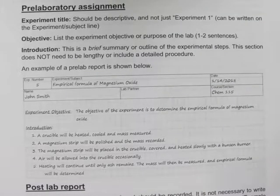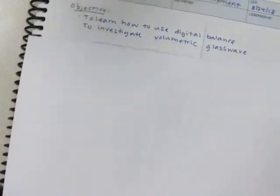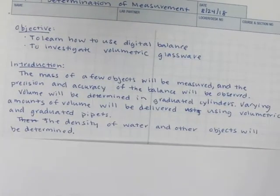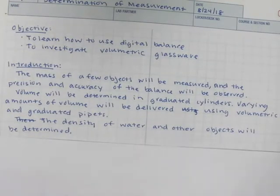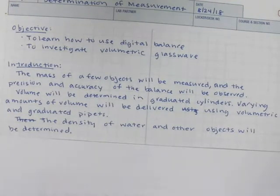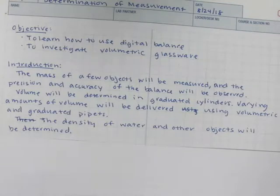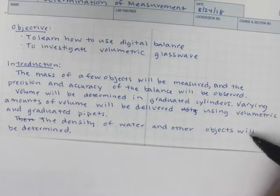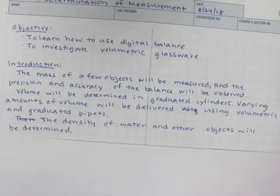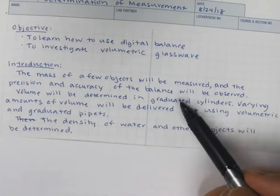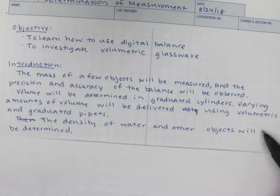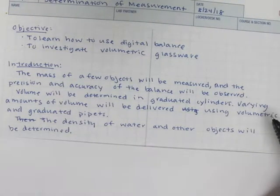So for experiment one that I've done here for you, this is just a summary. The mass of a few objects will be measured and the precision and accuracy of the balance will be observed. Volume will be determined in graduated cylinders. Varying amounts of volume will be delivered using volumetric and graduated pipettes. The density of water and other objects will be determined. This is the overview of the entire experiment. You can notice it's not very long - only a paragraph that summarizes the entire lab experiment.